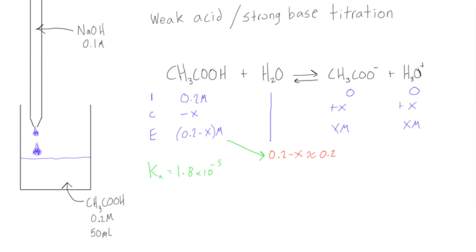With that said, we know that our Ka, which was equal to 1.8 times 10 to the negative 5, is equal to the concentrations of products over concentrations of reactants. We can write this as A minus times H3O plus over concentration of our weak acid, which was HA, just some shorthand here.